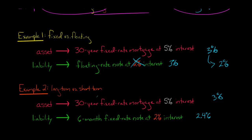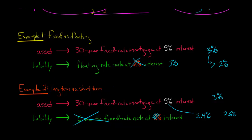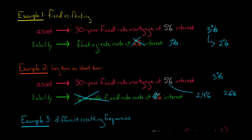The bank still needs funding because it's a 30-year asset, but it had a six-month liability. So the bank has funded long-term assets with short-term liabilities. When the liability matures after six months and the bank issues another note, the new rate is 2.4%. The difference between 5% and 2.4% means the new margin is 2.6%. That's an asset liability mismatch due to long-term assets being funded by short-term liabilities, which can lead to problems and shrink the margin.